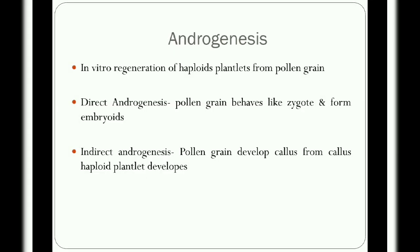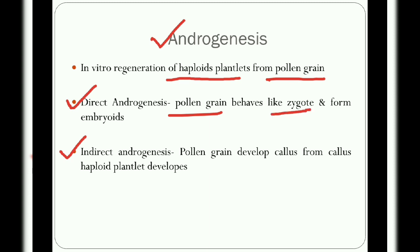Androgenesis is the in vitro regeneration of haploid plantlets from pollen grains. It has two types: direct androgenesis and indirect androgenesis. In direct androgenesis, pollen grains behave like a zygote and directly form embryoids, from which plantlets are regenerated. In indirect androgenesis, pollen grains develop into callus, and from that callus haploid plantlets are developed.